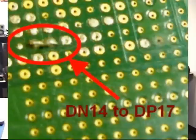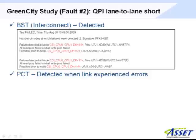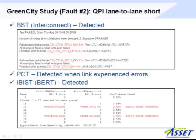The second fault I inserted was shorting two physically adjacent nets together, thinking this is like a pin-to-pin short under a CPU socket or something of that nature. Boundary scan is great at finding shorts and opens, so it detected this with no problems and gave us diagnostics right down to the pin level — lane 14 and 17 were shorted together. I ran the processor control test and found the link could still train and actually transfer data, with some intermittent failures detected by PCT. I ran the IBIST BERT test and we could see overflow errors almost immediately on lanes 14 and 17, while the rest of the lanes ran just fine.